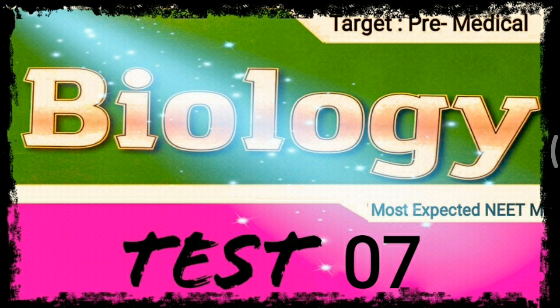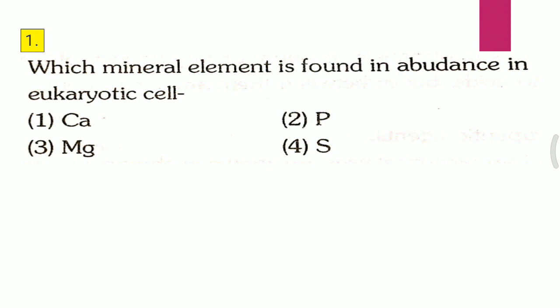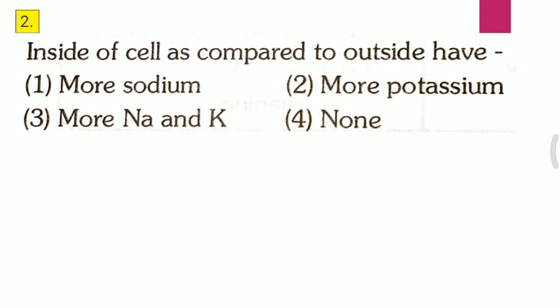Question one: Which mineral element is found in abundance in a eukaryotic cell? First, calcium; second, phosphorus; third, magnesium; fourth, sulfur. The correct answer is the first one, that is calcium.